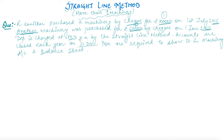Depreciation is charged at 10% per annum by the straight line method. Accounts are closed each year on 31st December. We are required to show the machinery account and the balance sheet. In the previous question we prepared the machinery account and the depreciation account, but here we are required to show the balance sheet as well.